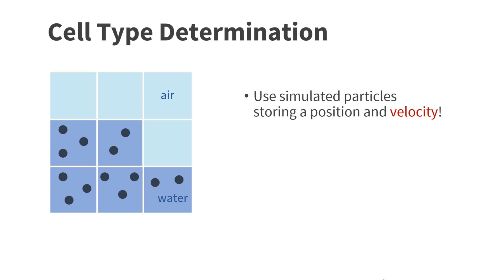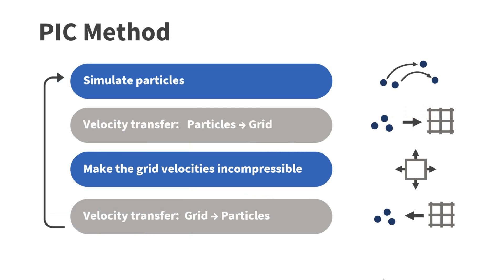The main idea behind the FLIP method is to use particles. The particles are simulated and have a position as well as a velocity. Now the water cells are simply the fluid cells that contain particles. This basic method is called PIC or particle-in-cell method. Here you see an overview. We first simulate the particles as simple moving mass points. Then we transfer their velocities to the grid. Next we make the grid velocities incompressible as in the Eulerian fluid simulation method. Finally, we transfer the velocities back to the particles. Since particles carry velocities, we can skip the advection step of the Eulerian method.